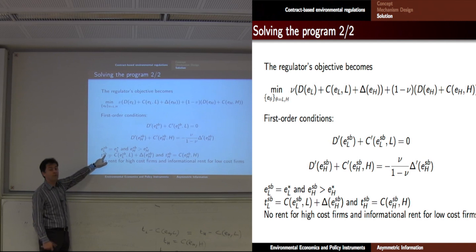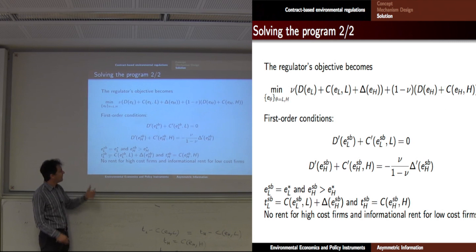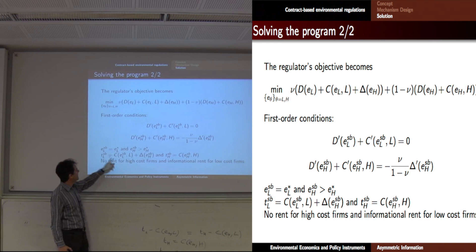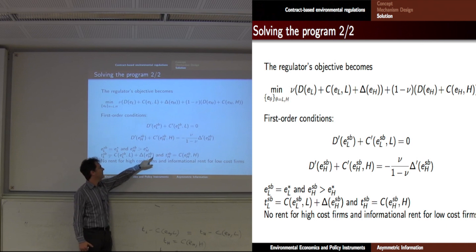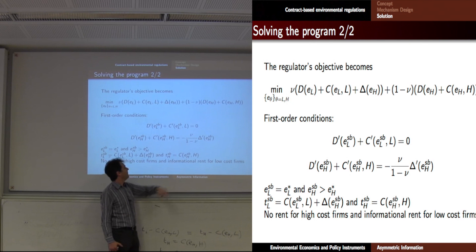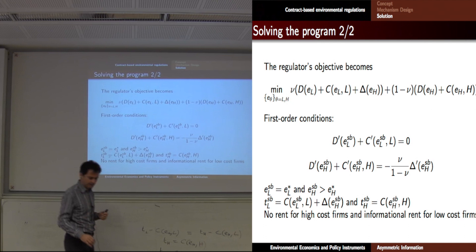At the end, you get the transfer — labeled SB for second best. This is the second-best policy: the best you can do given asymmetric information. The first best is optimal under full information. In the second best, you pay the low-cost firm its cost plus a minimized rent — minimized because you distorted emission — and you just pay the cost for the high-cost firm.